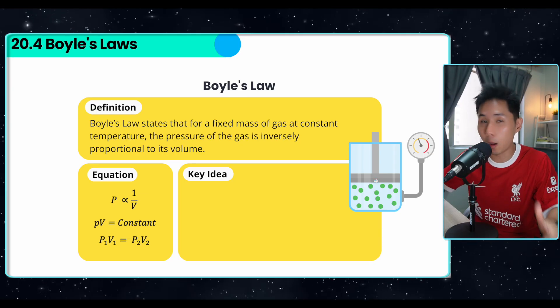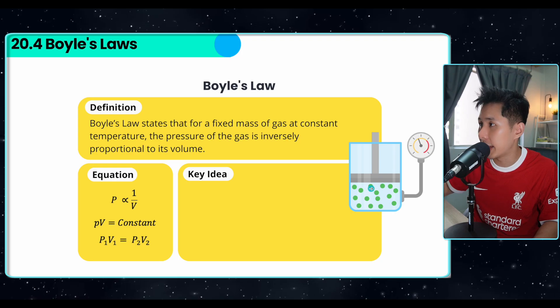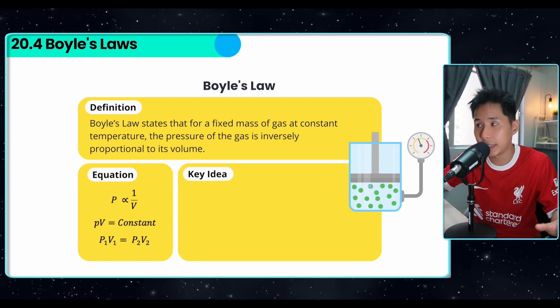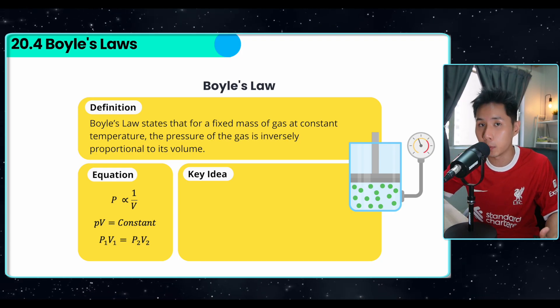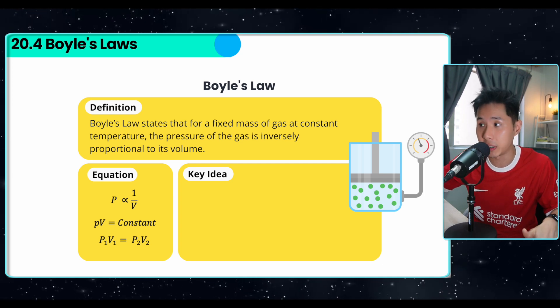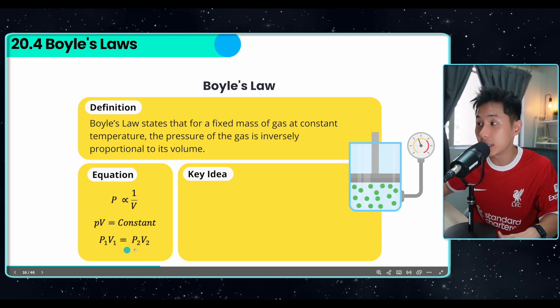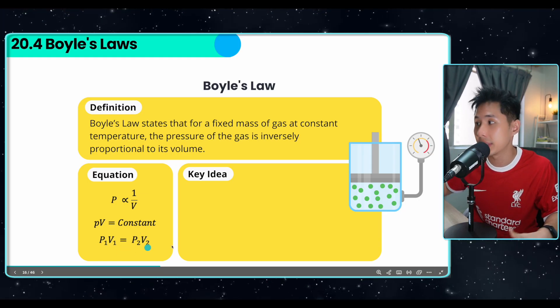Now, without further ado, let's go into the laws. First, Boyle's Law. It states that for a fixed amount of gas, the pressure of the gas is inversely proportional to its volume, meaning volume increase, pressure decrease, pressure increase, volume decrease. And this is the equation. We usually use the third equation when we want to solve a question.